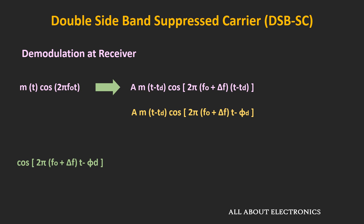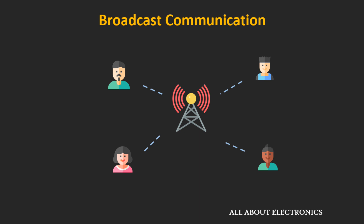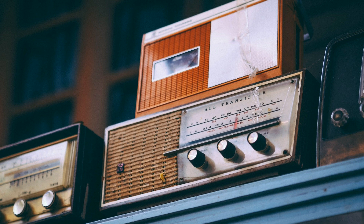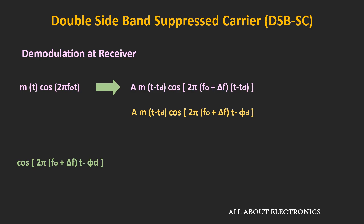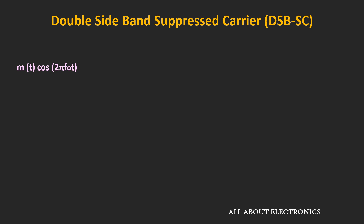This complexity is acceptable for point-to-point communication where the cost of transmitter and receiver are almost the same. But in broadcast communication, one station transmits and several hundreds or thousands of receivers receive the same signal, so the receiver cost must be lower. For broadcasting, it is economical to have one expensive transmitter with simple, less expensive receivers. To reduce receiver cost, the carrier signal can be sent along with the modulated signal so there is no need to generate it locally. This type of modulation is known as double sideband with carrier, or conventionally, Amplitude Modulation.